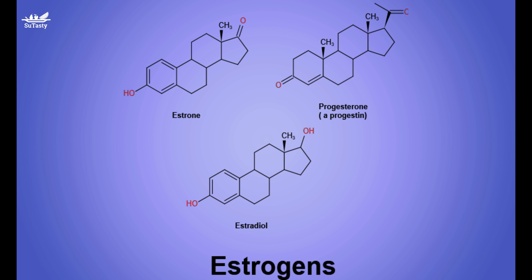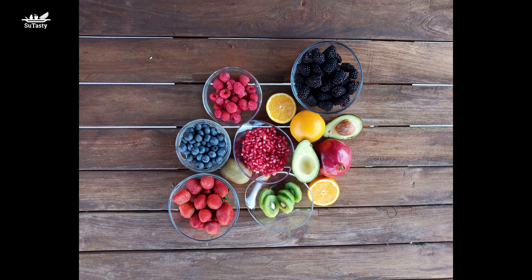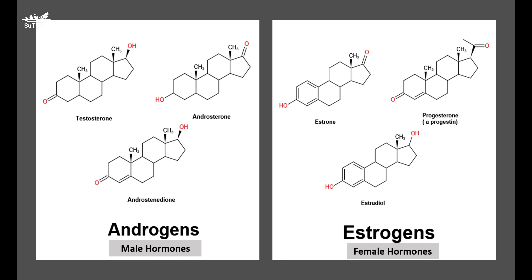Estrogenic hormones are responsible for developing female secondary sex characteristics and for the regulation of the menstrual cycle. Another kind of sex hormone called progestin is essential for preparing the uterus for implantation of a fertilized ovum during pregnancy. Progesterone is the most important progestin.